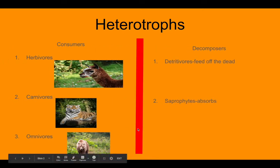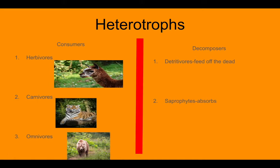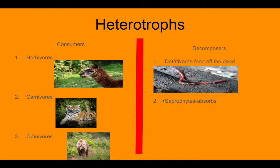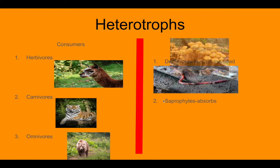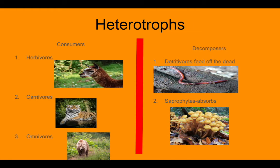Our second type of heterotroph are decomposers. Decomposers actually help break up things once they've died. So we have two types of decomposers. We have the detritophores, which feed off dead materials, so like this earthworm.